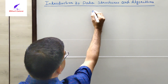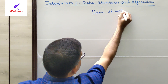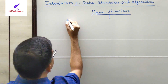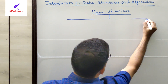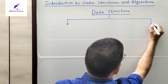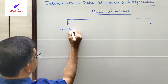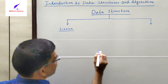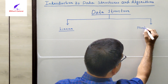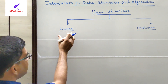Now, what is the classification of data structure? Data structures can be broadly classified into two categories: the first one is linear data structure, and the second one is nonlinear data structure.